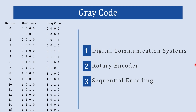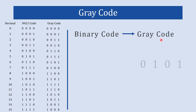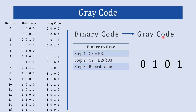Now let's explore gray code conversion. In this section we are going to understand how to convert binary code into gray code. Let's take the binary number 0101 and see how to convert it into gray code. It is a simple few-step process.